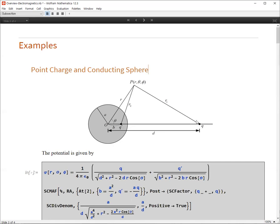So we have a point charge here. And using the image method, you can calculate the amount of the image charge q prime and the distance b from the center of the sphere.